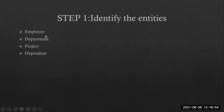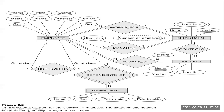So according to your answers, the entities — all the tables — are employee, department, project, and dependent. In this diagram, entities are represented with the help of a rectangle. Strong entities have a primary key and are represented with a single rectangle, whereas a weak entity is represented with a double rectangle.